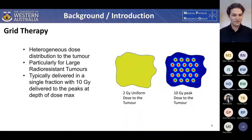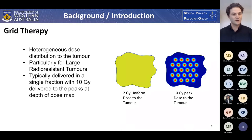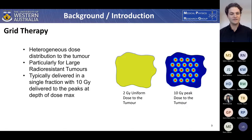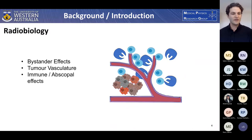This can be seen in the figure on the right where a uniform dose is compared to the grid dose. Grid therapy is particularly useful for large radio-resistant tumors and is typically delivered in a single fraction with 10 Gray delivered to the peaks at depth of dose max, or to the surface in a kV beam. This large peak dose is possible due to the reduced volume of normal tissue that is irradiated, and this method has an improved therapeutic ratio in some situations.